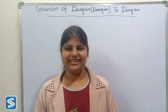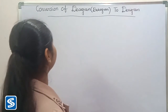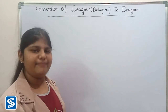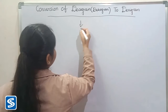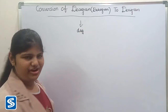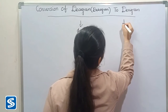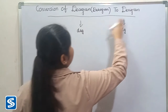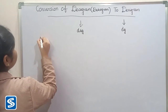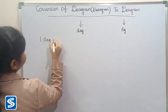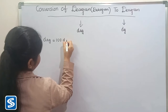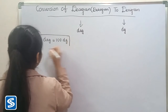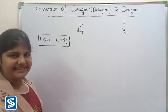Hi friends, welcome to So Much channel. In this video I am going to teach how to convert decagram into desigram. Decagram and desigram are the metric system of mass units. The short form of decagram is DAG and the short form of desigram is DG. The formula for converting decagram into desigram is: 1 decagram is equal to 100 desigrams. Now we will take some examples.